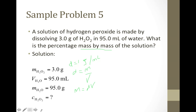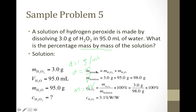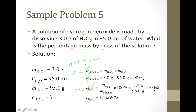Now we know the mass of water is 95 grams. The total mass of solution = mass of H₂O₂ + mass of water = 3 g + 95 g = 98.0 g. Using concentration (W/W) = mass of solute / mass of solution × 100%: that's 3 g divided by 98 g times 100%, giving us 3.1% W/W.